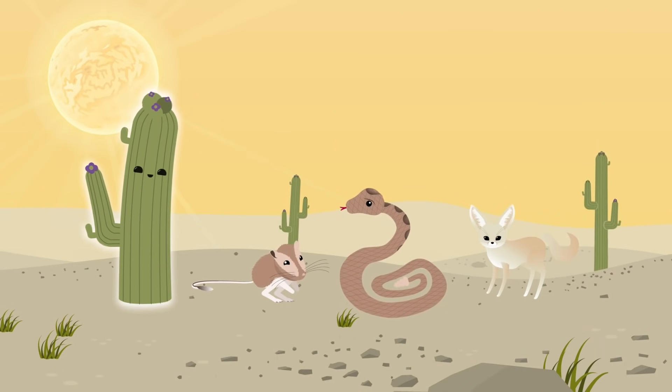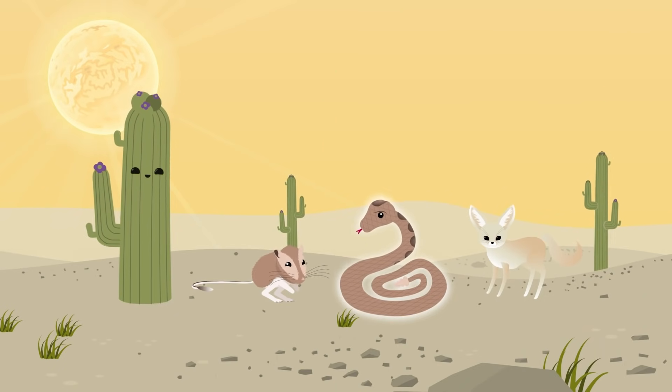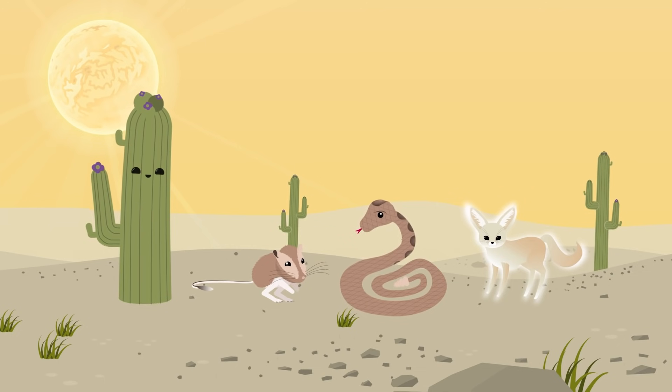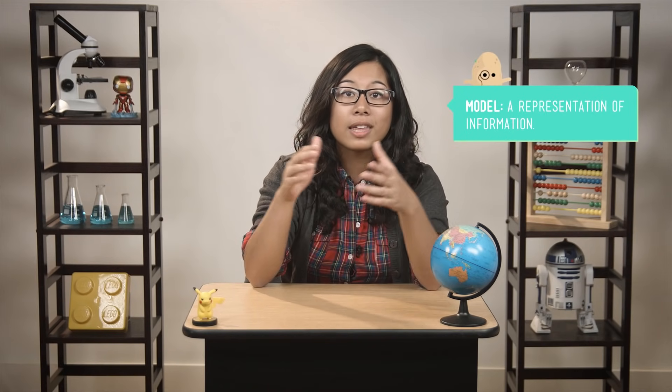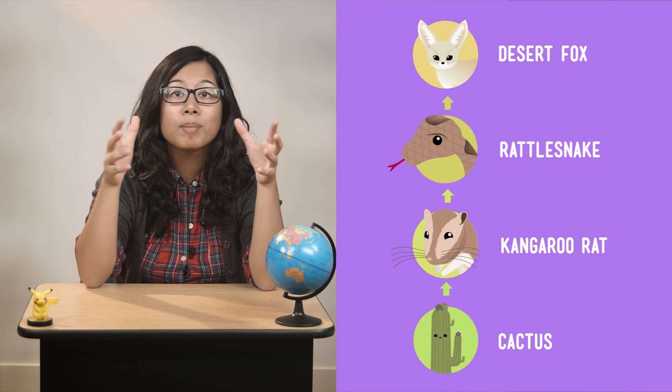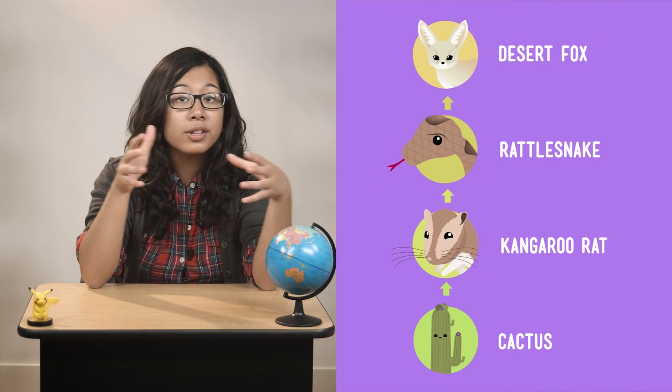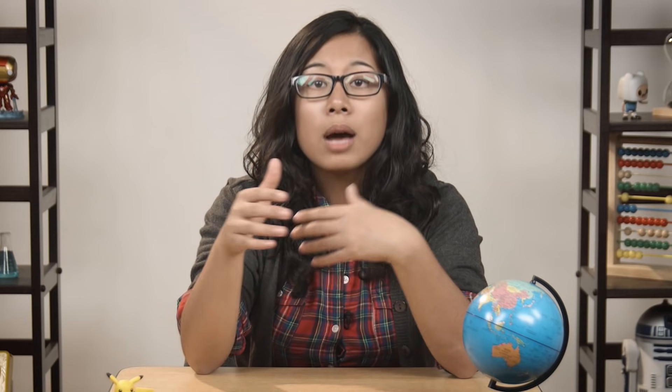Let's look at some organisms that are part of a desert ecosystem. We have our friend the cactus, a kangaroo rat, a rattlesnake, and a desert fox. We can use a handy-dandy food chain model to see how energy flows between living things in this ecosystem. It would probably look something like this. The cactus makes energy by photosynthesis, and the energy goes from the cactus to the rat, then to the snake, and then to the fox.